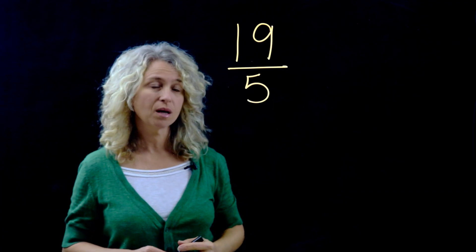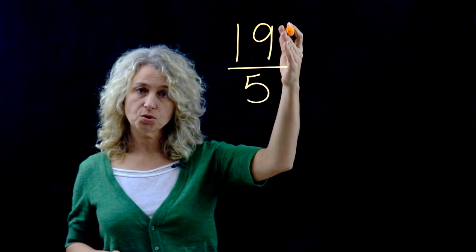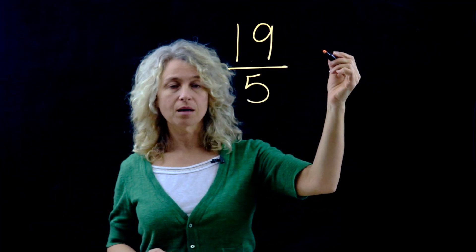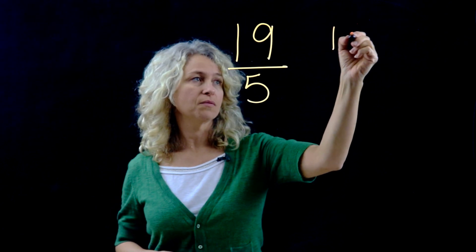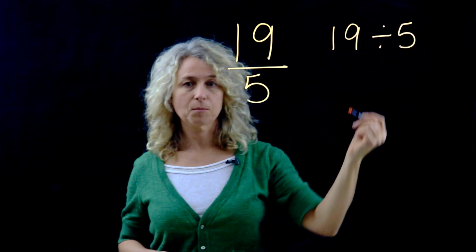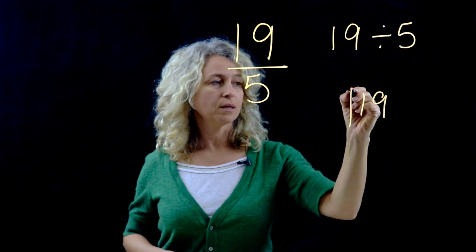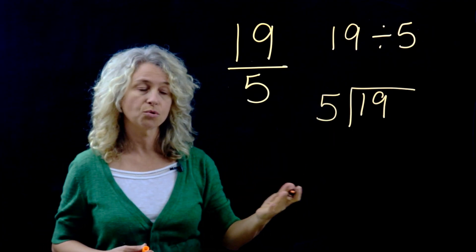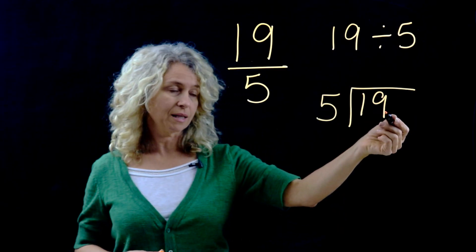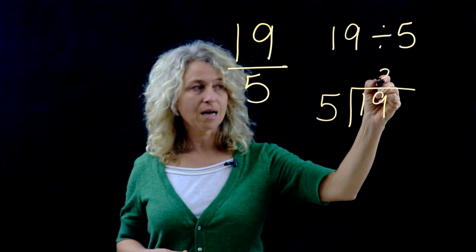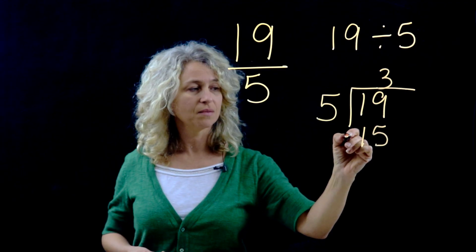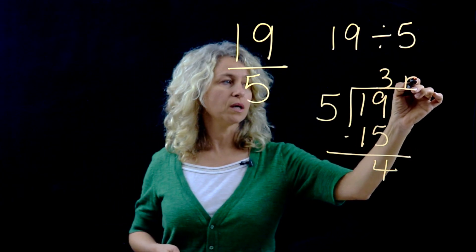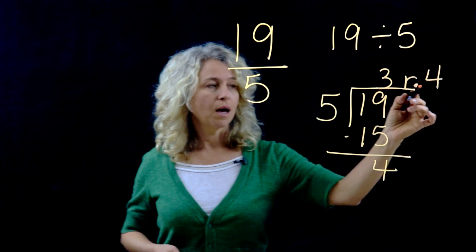So here's another example. This is also an improper fraction because the larger number is on top. So remember to think of this as a division problem of 19 divided by 5. Okay, and then you can put 19 in the house. 19 divided by 5, and do your long division. 5 can go into 19 three times. 3 times 5 is 15, and when you subtract you have 4.